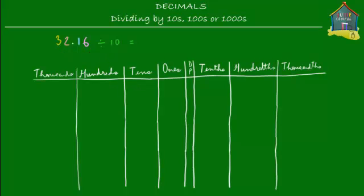Now 32.16 means there are three tens, two ones, then we have the decimal point (dp), then one tenth and six hundredths. So we have three tens, two ones, one tenth and six hundredths.